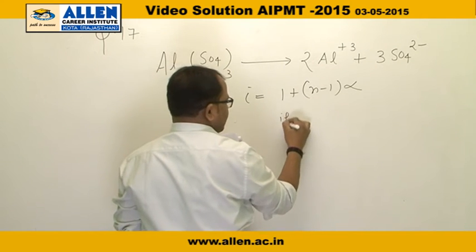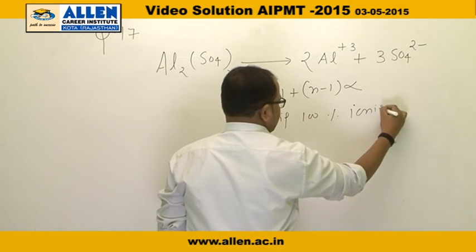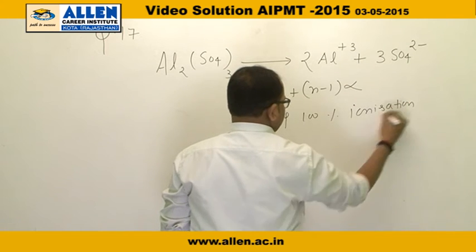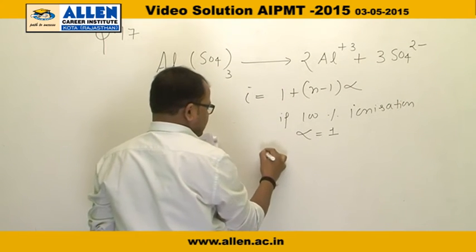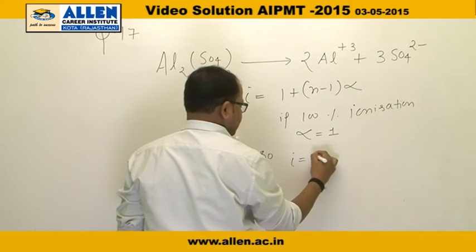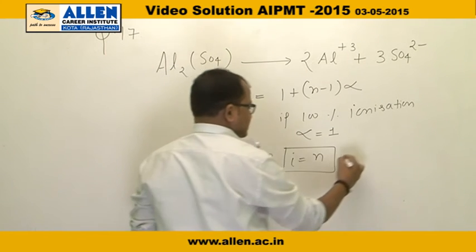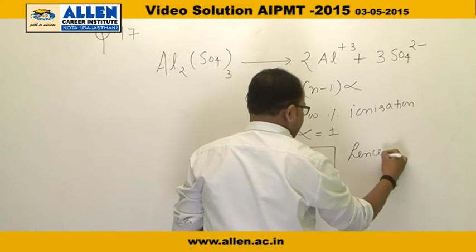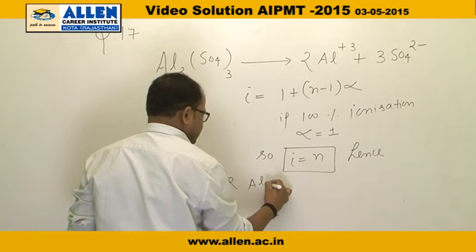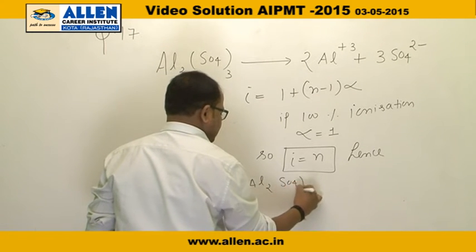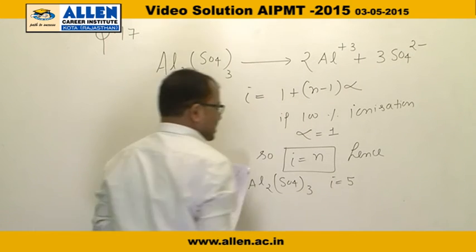For 100% ionization, alpha equals one, so i equals n. For Al₂(SO₄)₃, the total number of ions n = 2 + 3 = 5, hence i = 5.